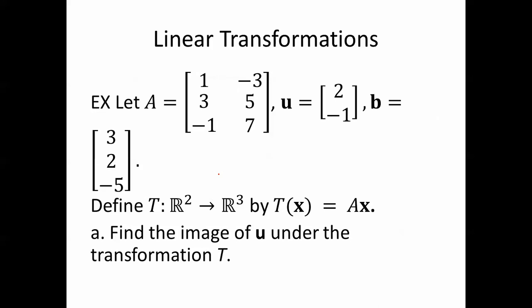Let A be the matrix [1, -3; 3, 5; -1, 7], u is [2, -1], and b is [3, 2, -5]. Let's define T to be a transformation from R^2 to R^3. We'll define it by T(x) = Ax. Let's find the image of u under the transformation T.